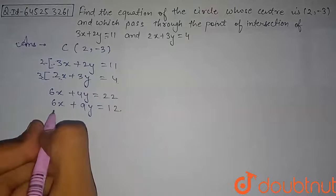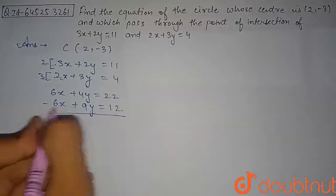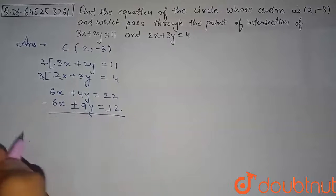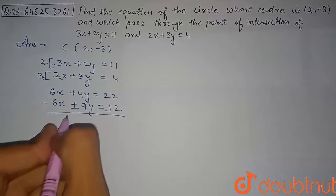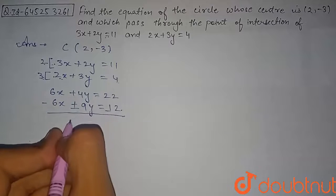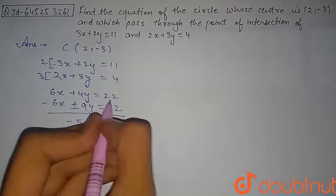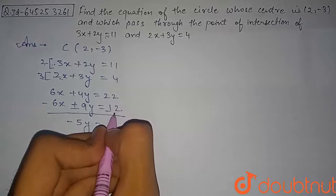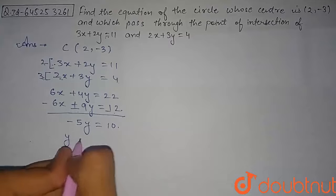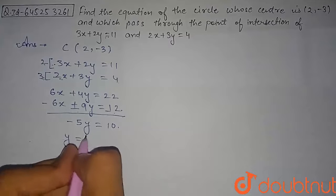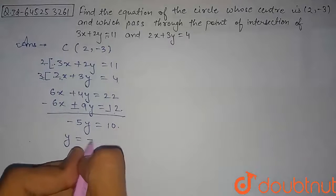Subtracting the two equations, the x terms cancel to give 4y - 9y = 22 - 12, which simplifies to -5y = 10. From here, the value of y comes out to be 10 divided by -5, which equals -2.